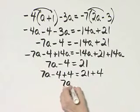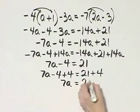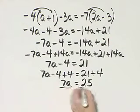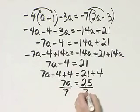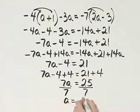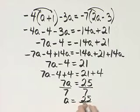The left side simplifies to 7a. The right side, 25. And how do I finish solving? I'll divide both sides by the coefficient of a, which is 7. And there I have a is 25 over 7.